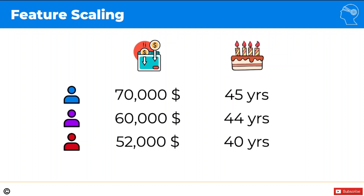The task at hand is going to be slightly different from the regressions and classifications we've been discussing. The task is to see which of the two people the purple person is most similar to, just based on this data. Would you say the purple person is more similar to the blue person, or more similar to the red person? This is more relevant for clustering tasks, but it's a simple illustrative example to show the importance of feature scaling. Feel free to pause and think about it.